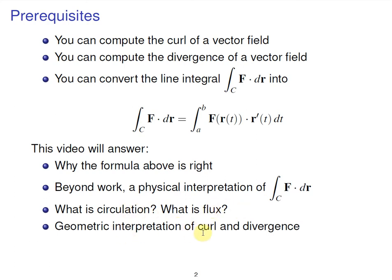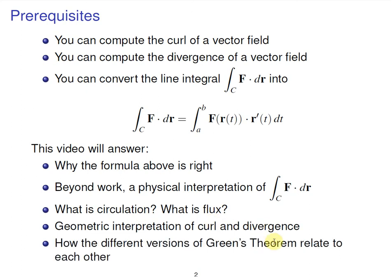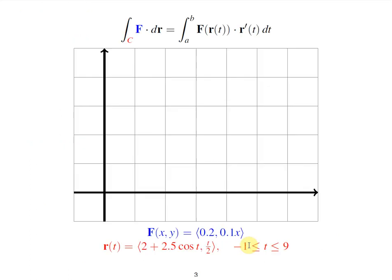We'll give a geometric interpretation of what curl and divergence are — again, you should know how to compute them, but what do they really mean? We'll talk about that. And then these things are all related to each other — circulation, flux, curl, and divergence — through the various versions of Green's theorem, so we'll try to talk through how those all relate to each other.